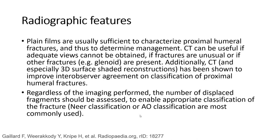Plain films are usually sufficient to characterize proximal humerus fractures and to determine the primary treatment management. CT can be useful if adequate views cannot be obtained, if fractures are unusual, or if other fractures are present. Additional CT, and especially 3D surface reconstruction, has been shown to improve inter-observer agreement on classification of proximal humerus fractures.